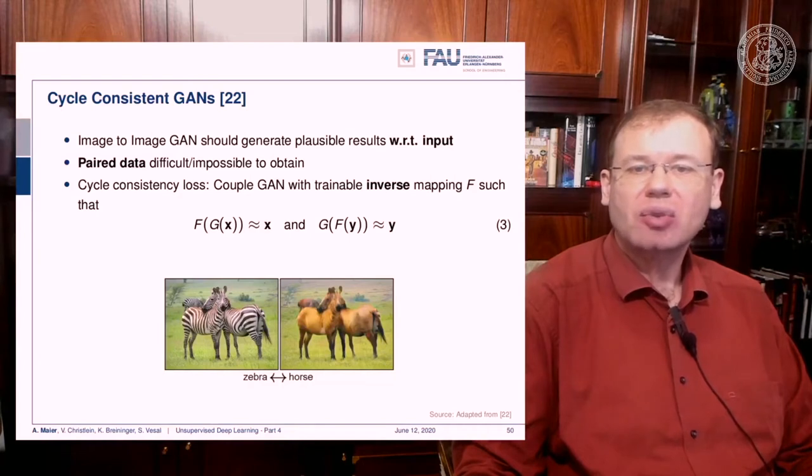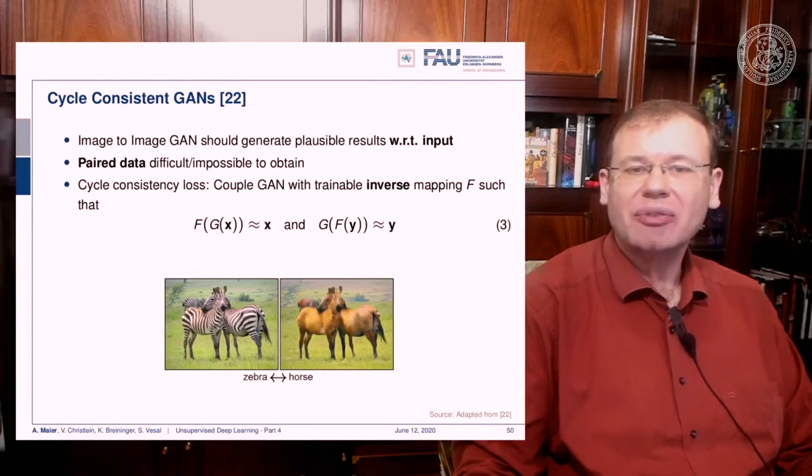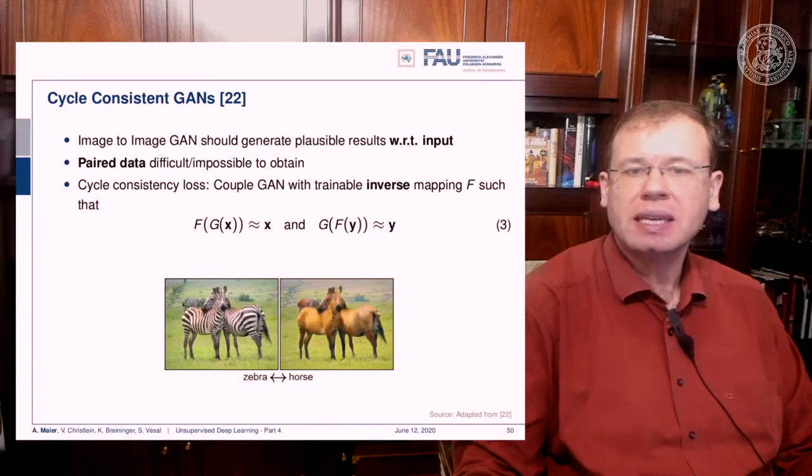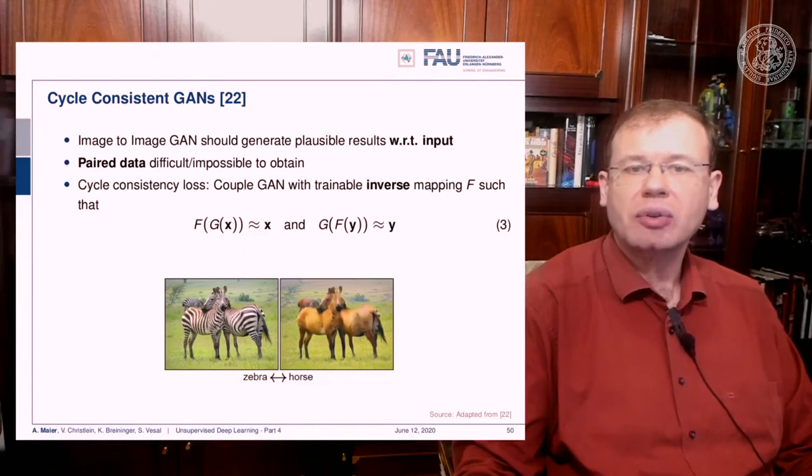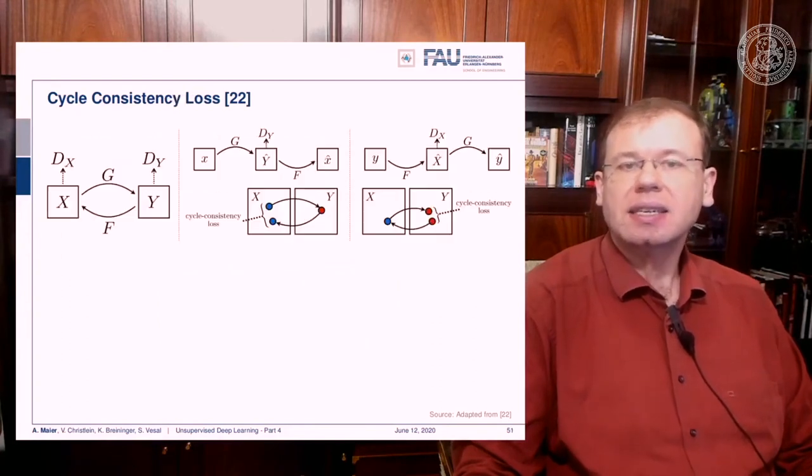You couple GANs with trainable inverse mappings. The key idea is that you have one conditional GAN that inputs g as the conditioning image and generates some new output. If you take this new output and use it in the conditioning variable of f, it should produce x again. You use the conditioning variables to form a loop. The key component is that g and f should be essentially inverses of each other. If you take f of g, you should end up with x again. If you take g of f of y, then you should end up with y again.